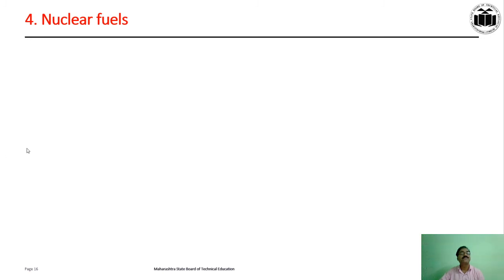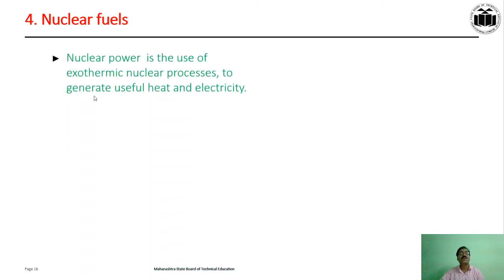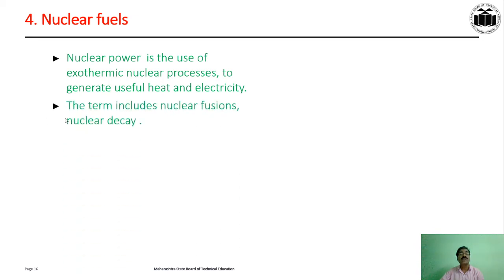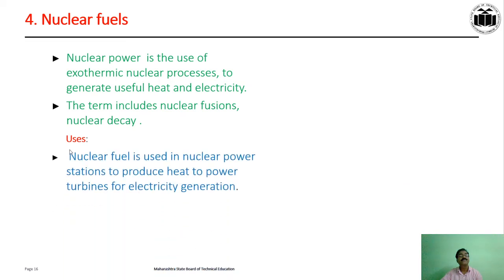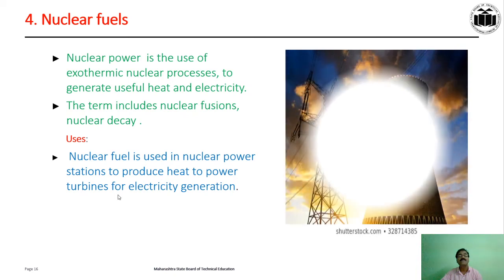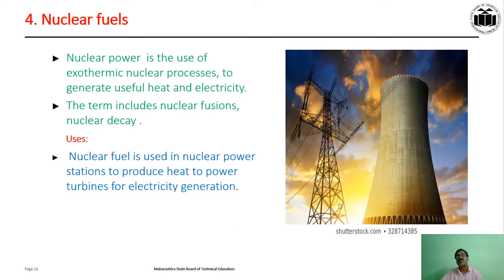Nuclear fuel: nuclear power is the use of exothermic nuclear processes to generate useful heat and electricity. The term includes nuclear fusion and nuclear decay. Uses of nuclear fuel: it is used in nuclear power stations to produce heat to power turbines for electricity generation. This figure shows how nuclear fuel is used.